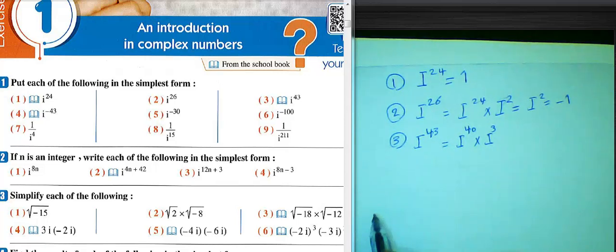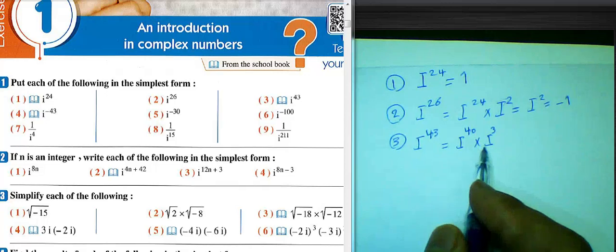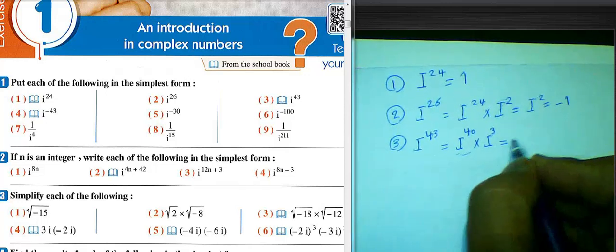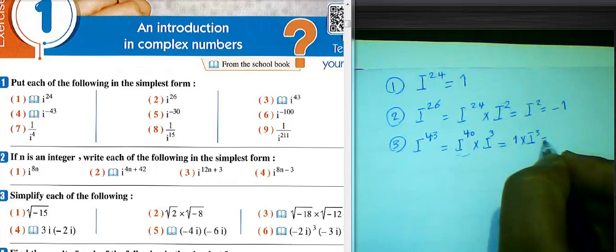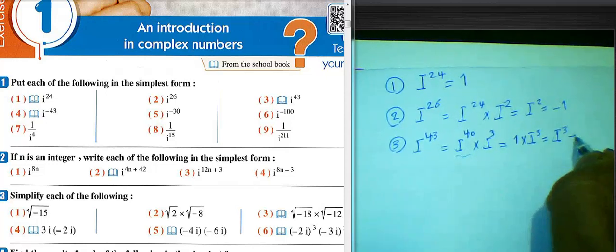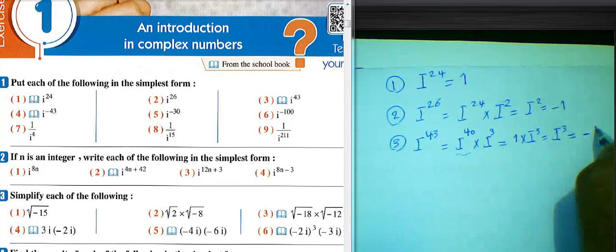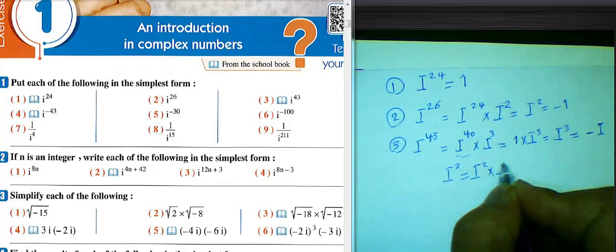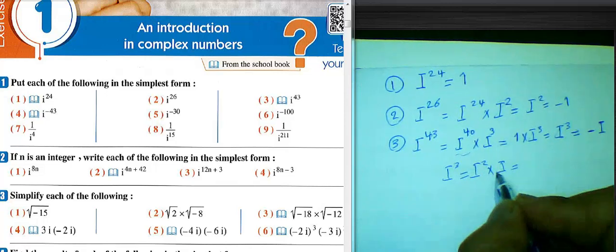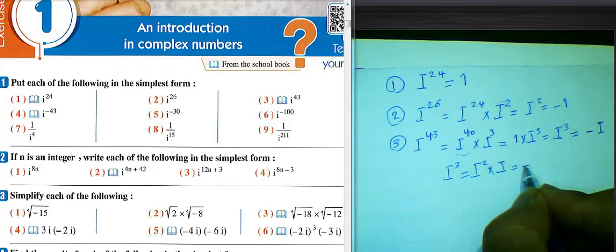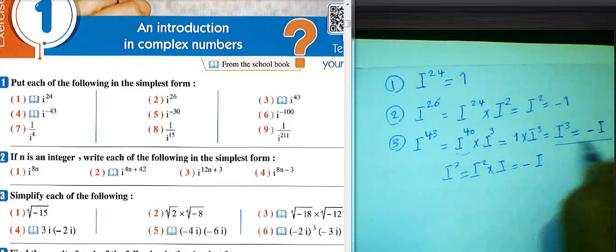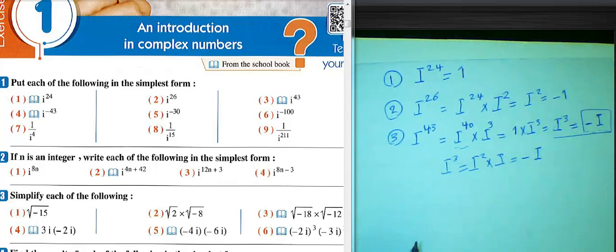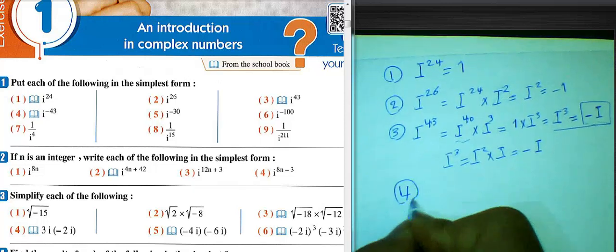i^40 equals 1, so 1 times i^3 equals i^3. We know i^3 equals negative i, because i^3 equals i^2 times i, and i^2 equals negative 1, so negative 1 times i equals negative i. The result is negative i.